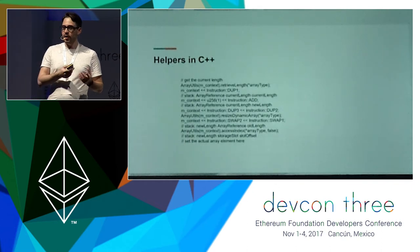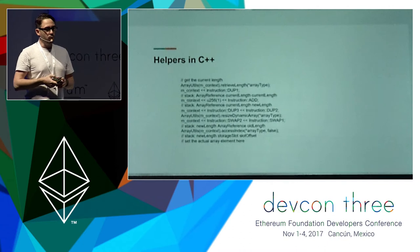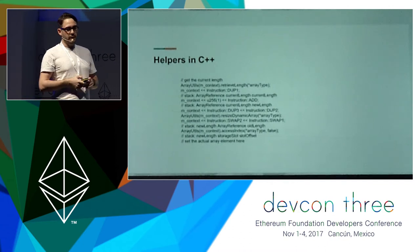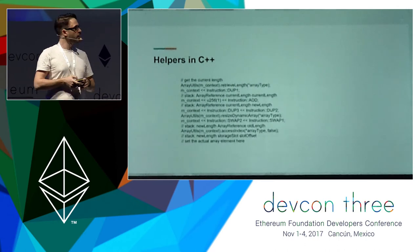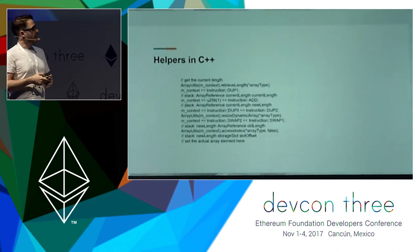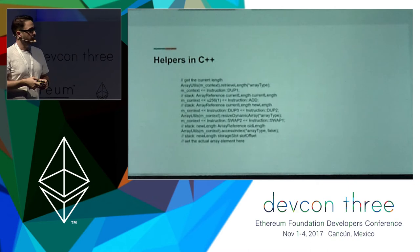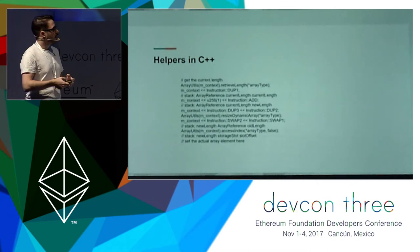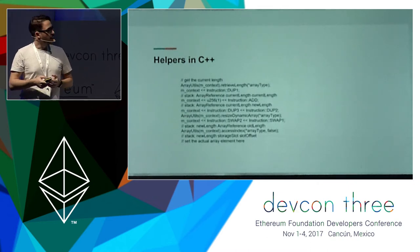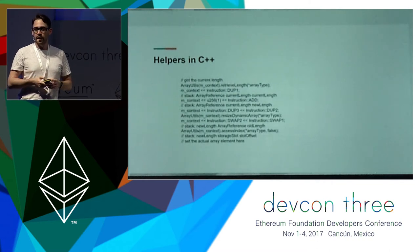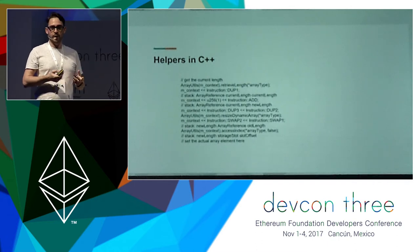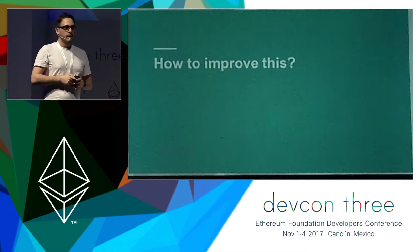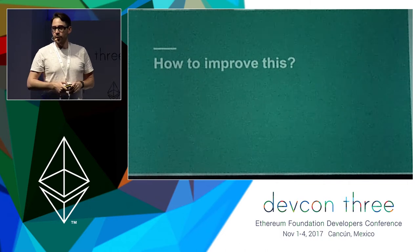Here is one example for helpers — this is the code for pushing a value to an array. First we retrieve the length, we increase the length of the array, and we resize it. Then we get the reference — in this example, a storage slot and storage offset. And finally we can interact with that array. So there must be a way to improve this.